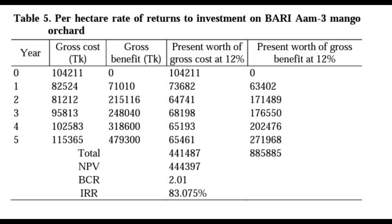This slide represents the per-hectare rate of return on investment for Bariyam 3 mango. The table shows the average net return on investment grows substantially as the plantation matures and produces more fruit. In summary, after five to six years, the profit per hectare on average is about 7 to 10 lakhs per year — which is approximately 10,000 to 12,000 US dollars per year.